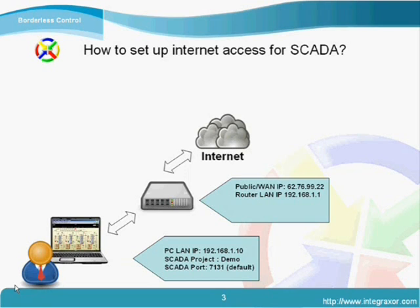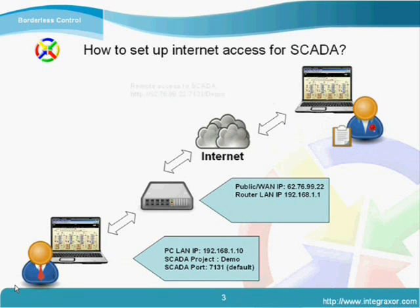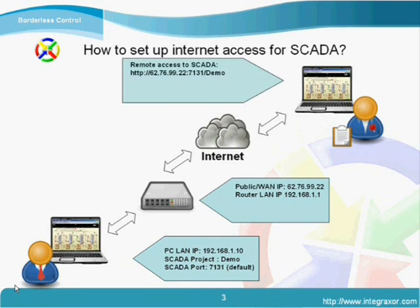On the other side of the internet, you may have licensed users accessing the Web Scada server by using the specific public IP address with a port number. The first problem you may encounter is that your router might block all the ports for security reasons, so we have to set up the router to port forward any request for port 7131 to the Integraxer Web Scada server.